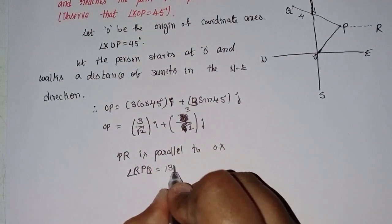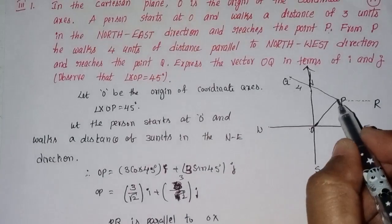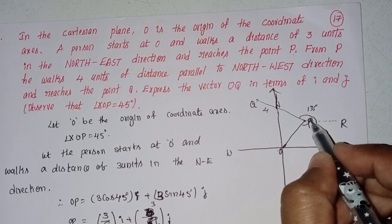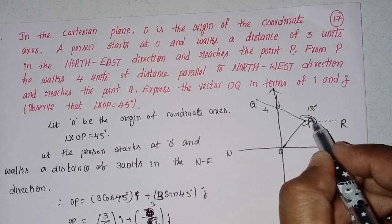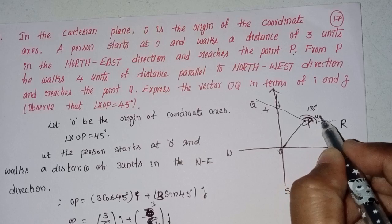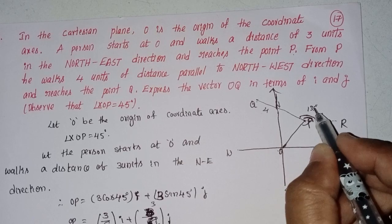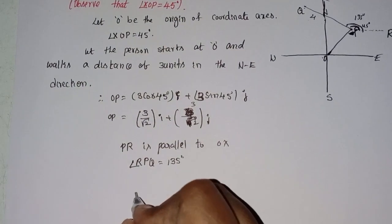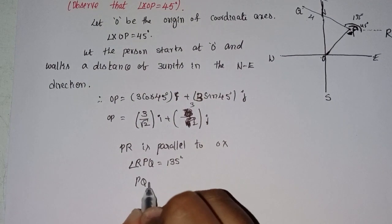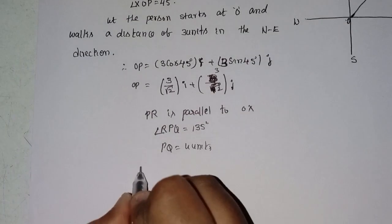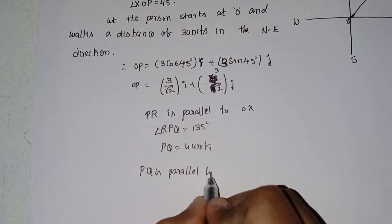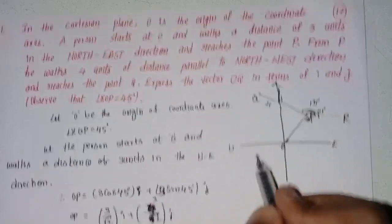This angle is 135 degrees. This angle is 45 degrees, and this angle is 135 degrees. PQ equals 4 units. PQ is parallel to the north-west direction.